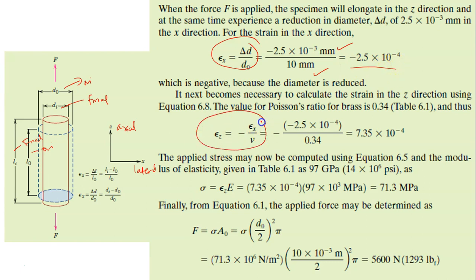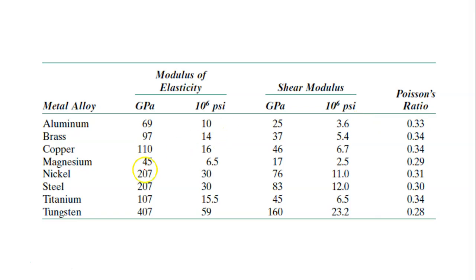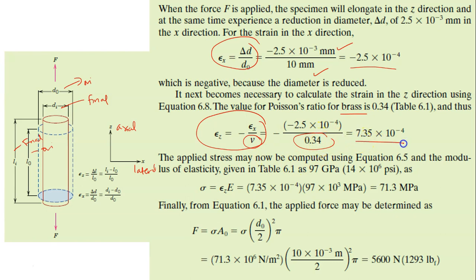Then you use Poisson's ratio. This is the formula. You plug in the lateral strain divided by Poisson's ratio for brass. You can find the Poisson's ratio for brass from this table—it's 0.34. Plug it into this equation and you get this value.